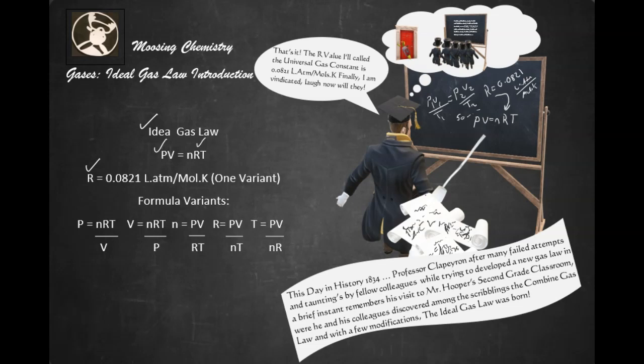Now, just like any other mathematical formula, you can find variants. For example, if you want to find pressure, you simply put the V under the NRT. If you want to find volume, you just put the pressure under the NRT.